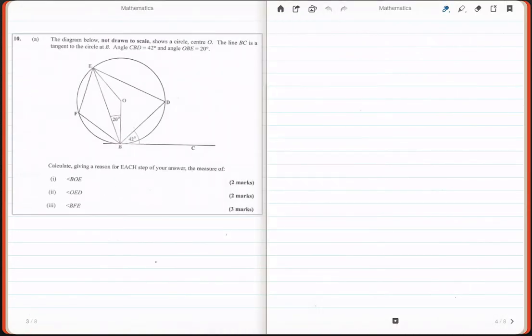The question is as follows: the diagram below, not drawn to scale, shows a circle with centre O and the line BC is the tangent to the circle at B. The angle CBD is equal to 42 degrees and the angle OBE is equal to 20 degrees. The first question asks us to calculate the angle BOE.